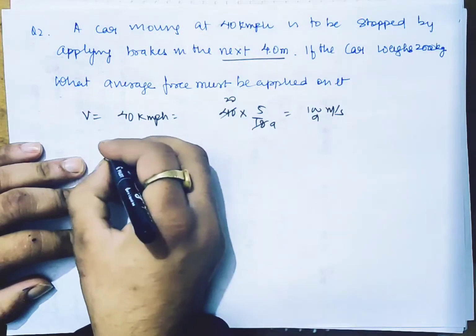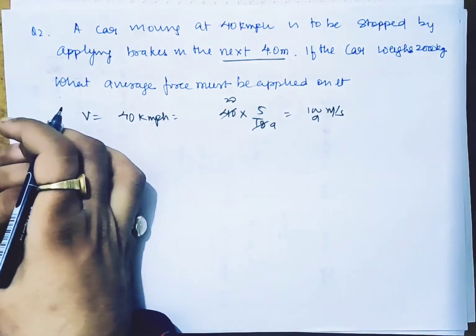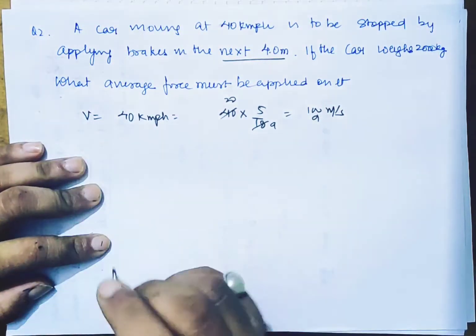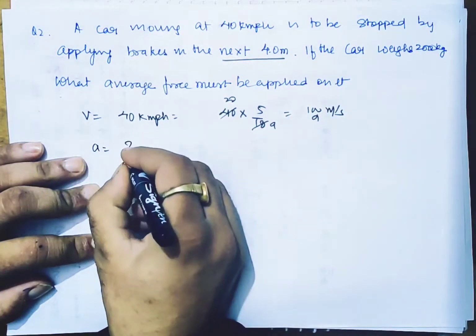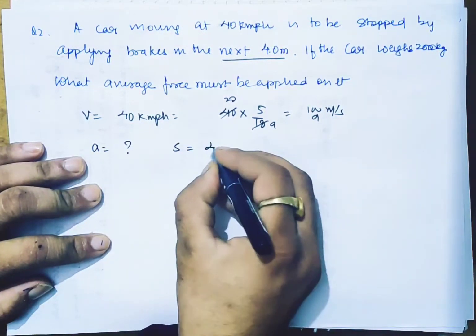So as it has a brake, then some acceleration will be done with retardation, which we call it. And the acceleration we need to find if the car is stopped in 4 meters.